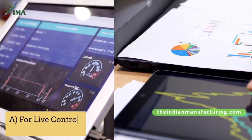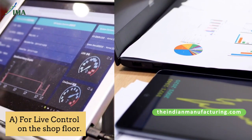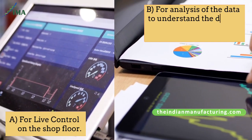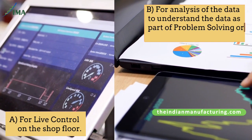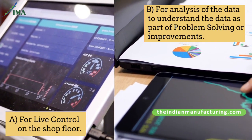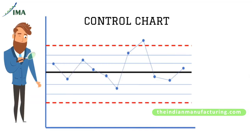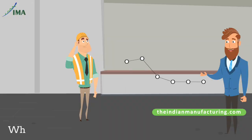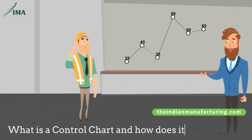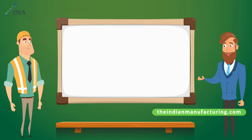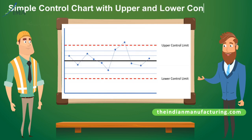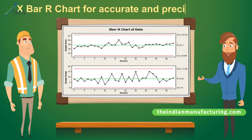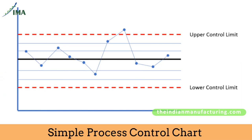First, for live control on the shop floor. Second, for analysis of the data to understand it as part of problem solving or improvements. Control charts help in monitoring the change in a process over a period. A simple control chart has an upper and lower control limit — an X-bar chart for accurate and precise control.